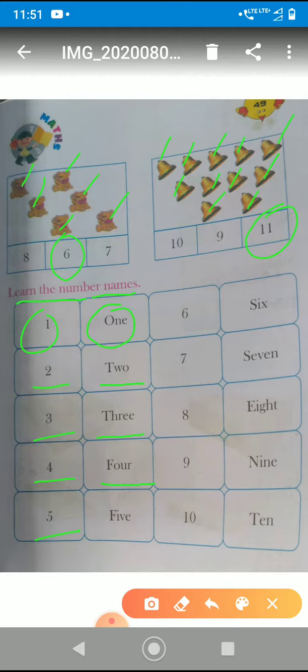Okay, the next number is what? Five. Spell it. F-I-V-E. Five. Very good.